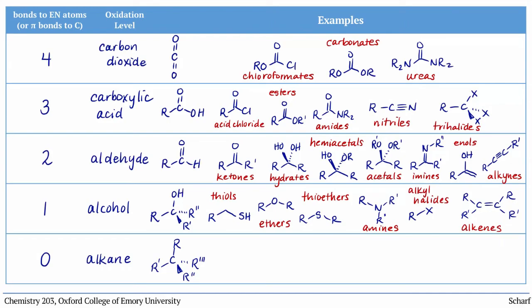The alkane oxidation level only contains alkanes, carbons with four sigma bonds to either carbon or hydrogen.